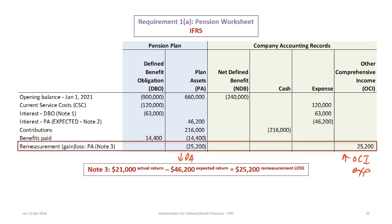The next item has to do with the difference between the actual return and the expected return. We're given the actual return on the pension, but in our calculations we calculated the expected return. The actual return was $21,000, but the expected return — based on the percentage the plan is supposed to generate — should have generated $46,200. This results in a difference of $25,200, and that's a remeasurement loss. The remeasurement loss is reflected in a reduction in the value of the plan assets. Under IFRS, the remeasurement loss goes to OCI — it does not go to pension expense.